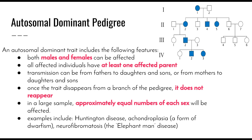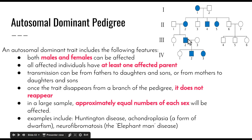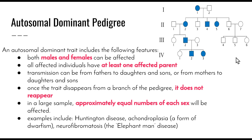Once the trait disappears from a branch of the pedigree, it does not reappear, because the recessive alleles are present in every individual within that branch. In a larger sample, there will be approximately equal numbers of affected males and females. Examples include Huntington's disease, achondroplasia — a form of dwarfism — and neurofibromatosis, the 'Elephant Man' disease involving uncontrolled swelling of parts of the body. In the pedigree shown, we can see roughly equal numbers of affected males and females, all affected individuals have at least one affected parent, and once the trait disappears in generation two it does not continue.